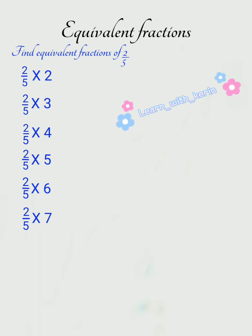2 by 5, we will multiply with 2. 2 2's are 4, 5 2's are 10. So, the first equivalent fraction is 4 by 10.